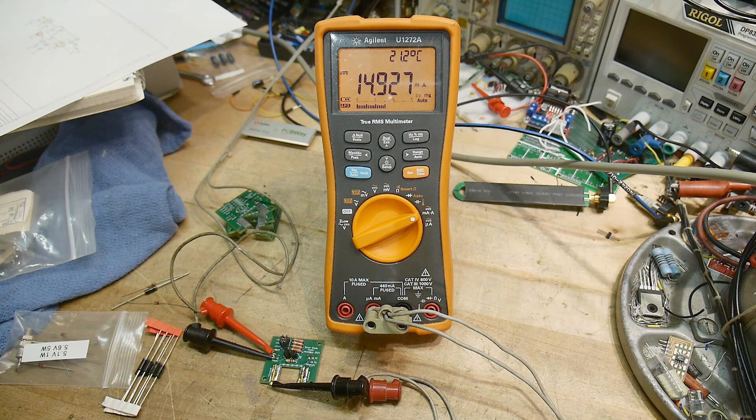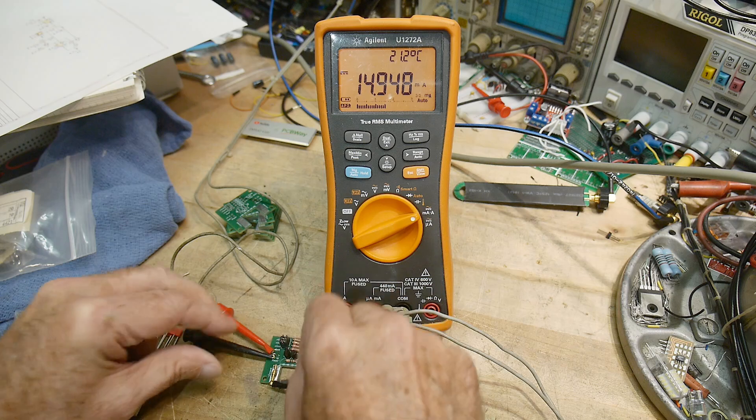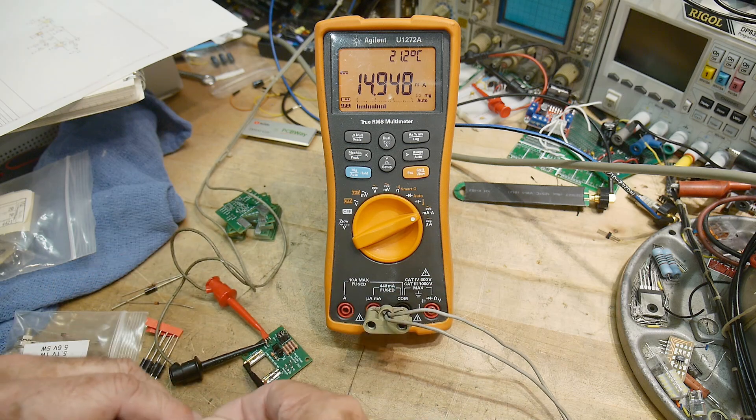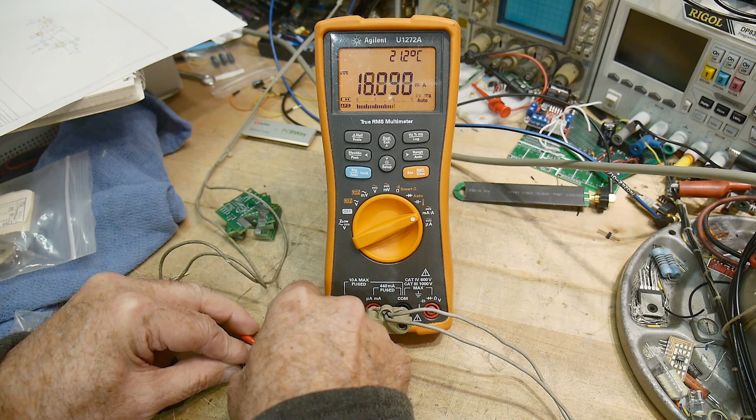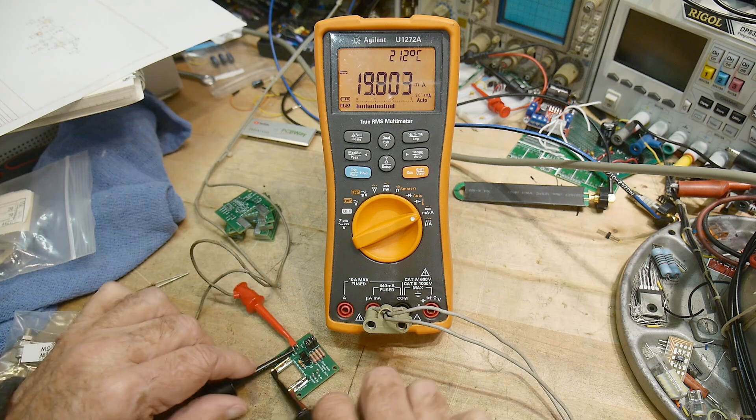If I put another jumper on, then we'll get the full 20 milliamps. Oops. 15. And there we go. 19.9. Very good.